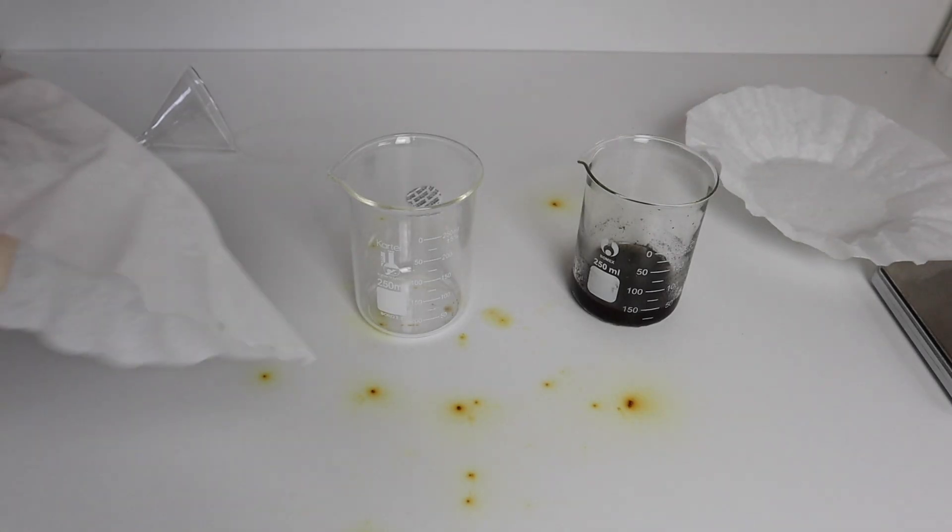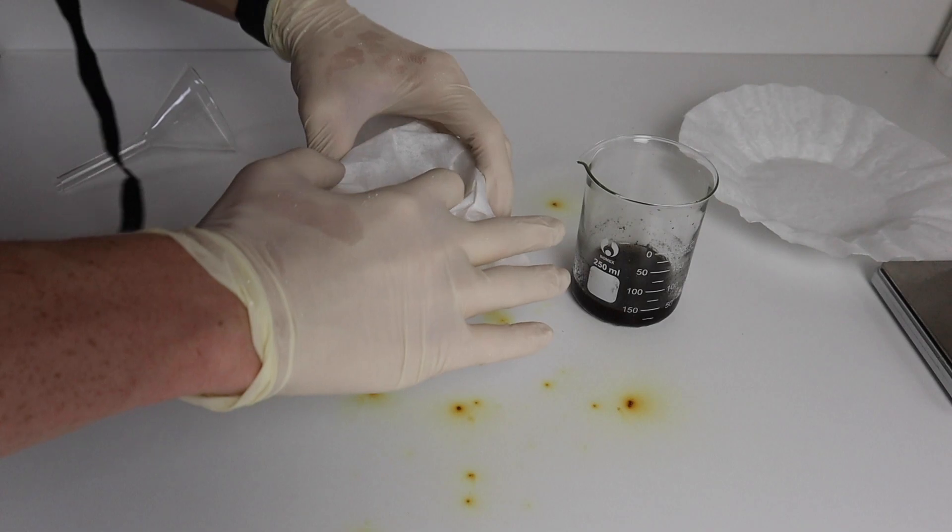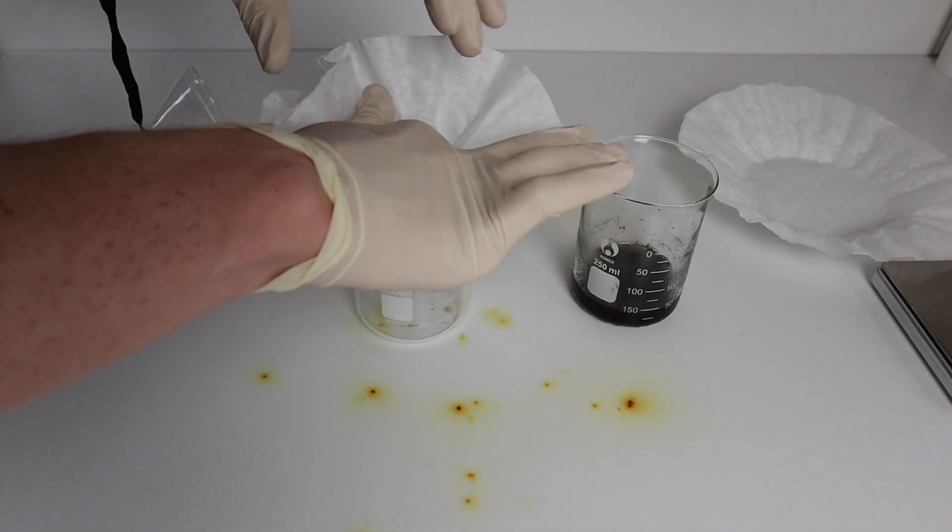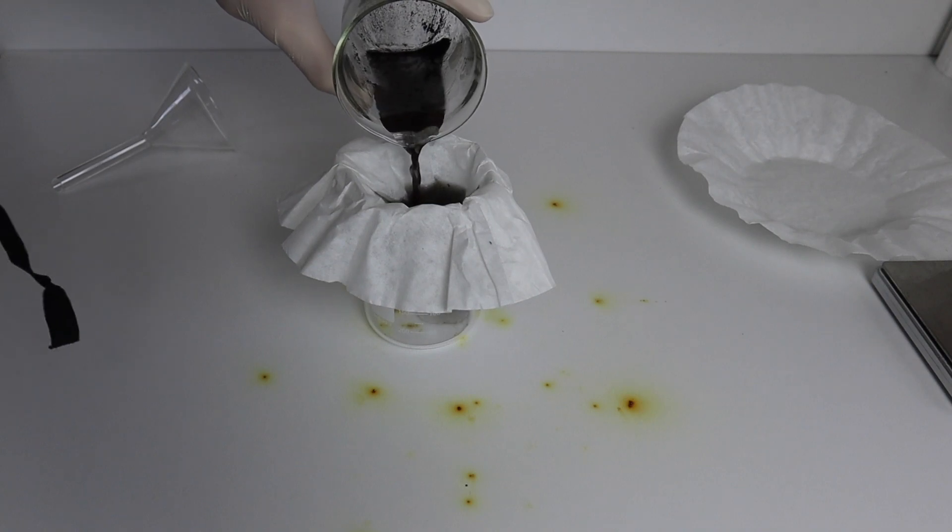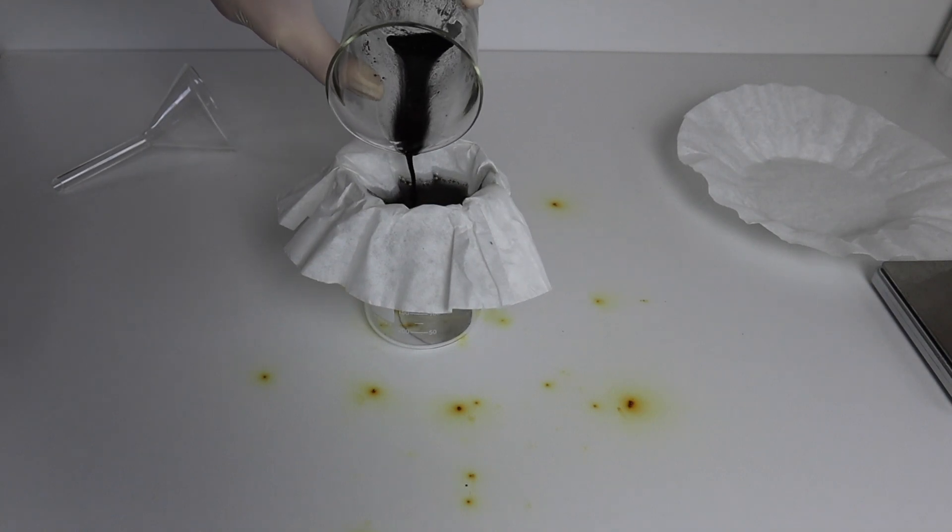Now that the nitrogen triiodide has been formed, I can filter off the ammonium hydroxide with a coffee filter. This was actually a rather tedious step because on my first take, the paper fell into the beaker and I had to redo it.